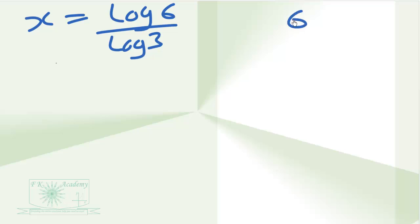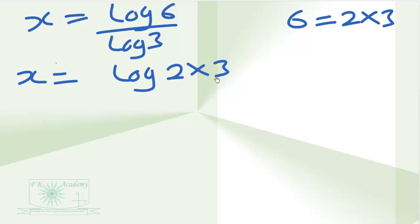Remember that 6 is a product of 2 and 3. So therefore, we have x is equal to log of 2 times 3 divided by log 3.